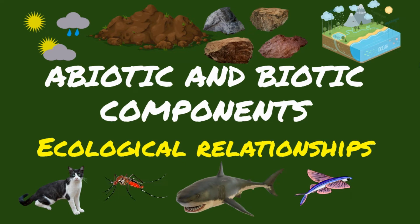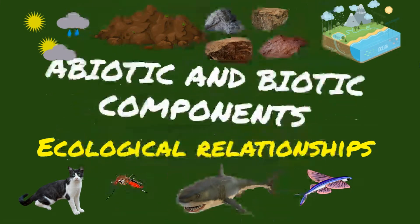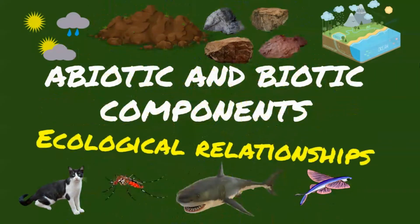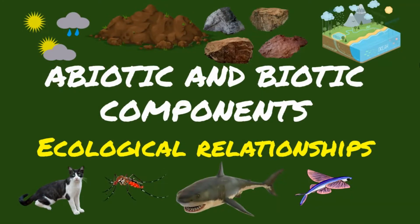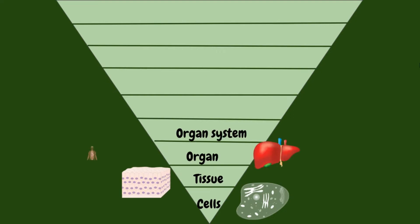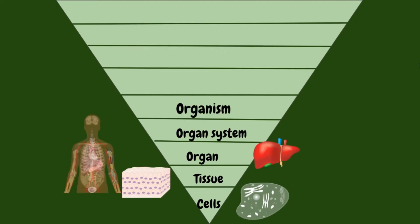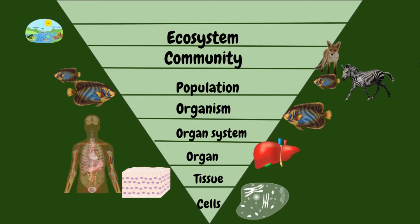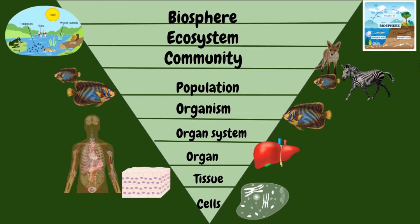Hello, everyone. In this video, we will be discussing about the biotic and abiotic components in an ecosystem, as well as different ecological relationships. In our previous lessons, we learned about the different biological levels which are arranged in a unique and complex hierarchical organization.